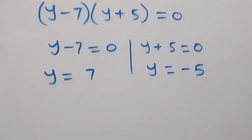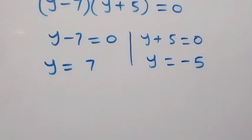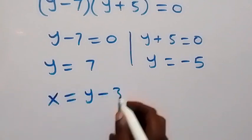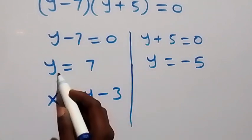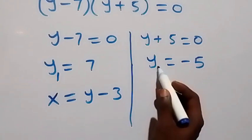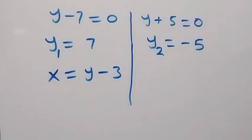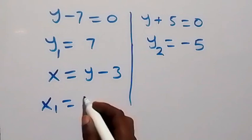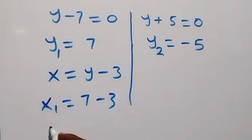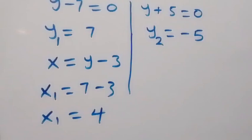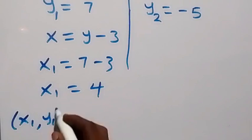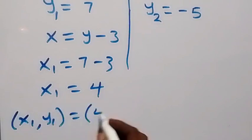To get the corresponding values of x, we use equation 3: x equals y minus 3. If y1 is 7, then x1 equals 7 minus 3, which gives x1 equals 4. So the first solution x1 comma y1 is 4 comma 7.